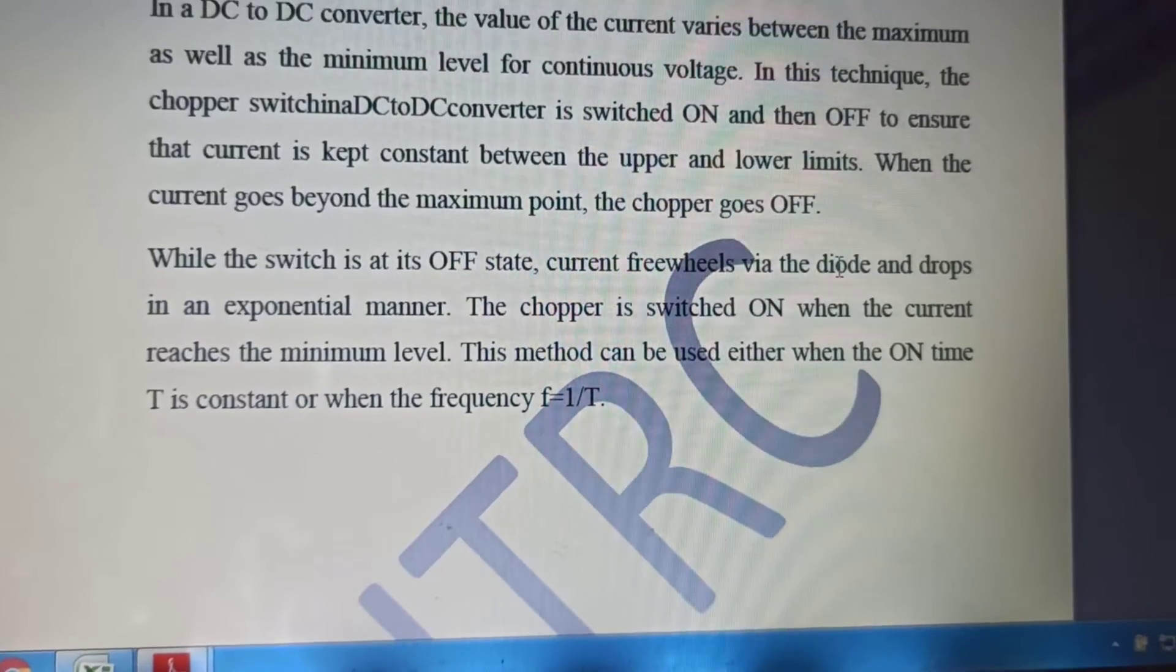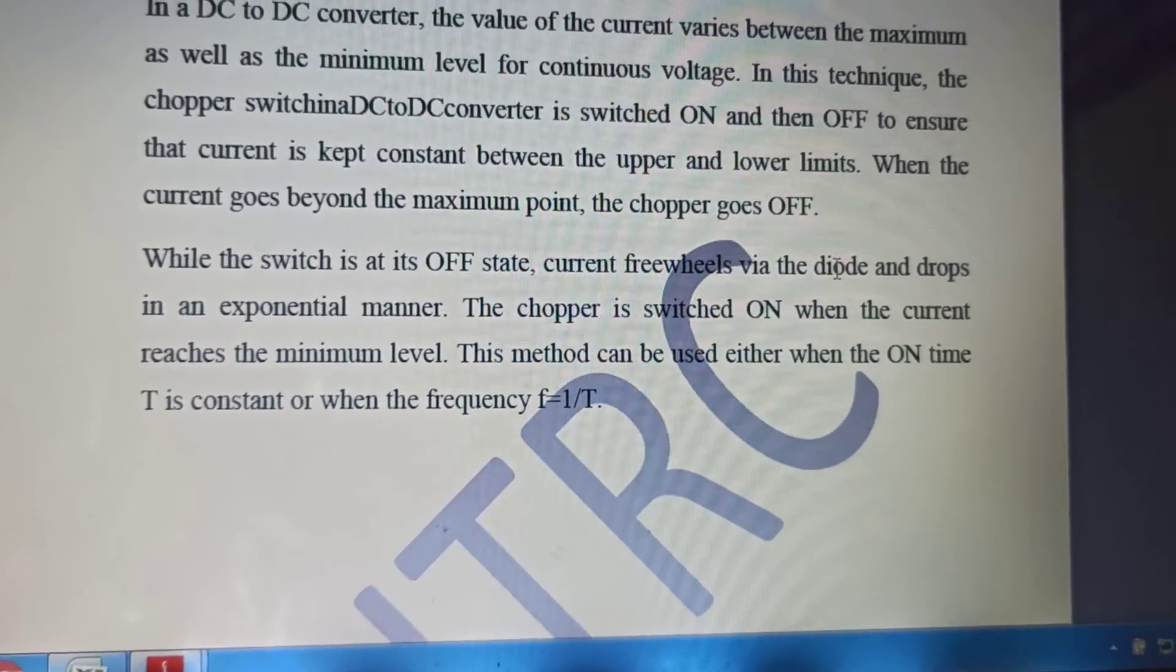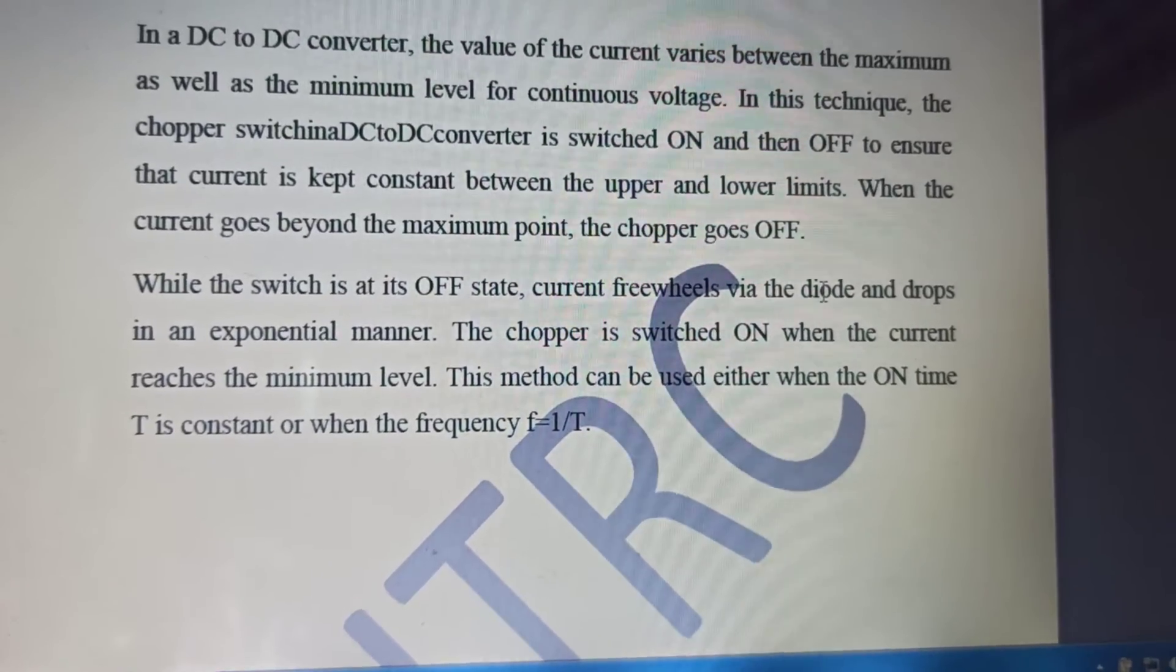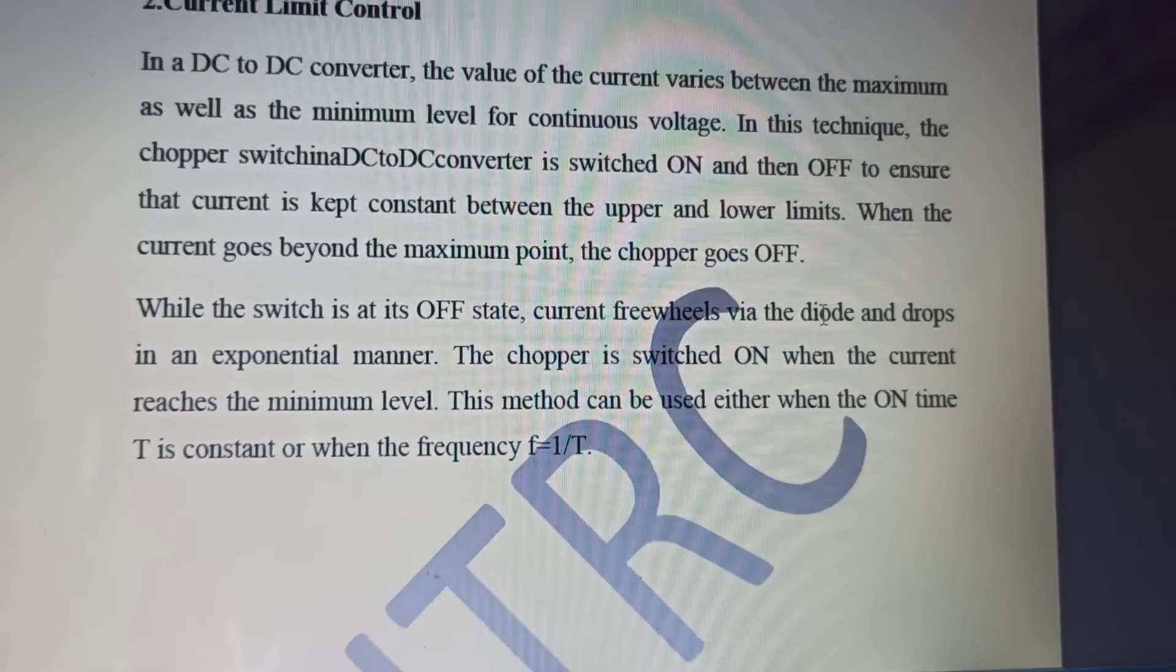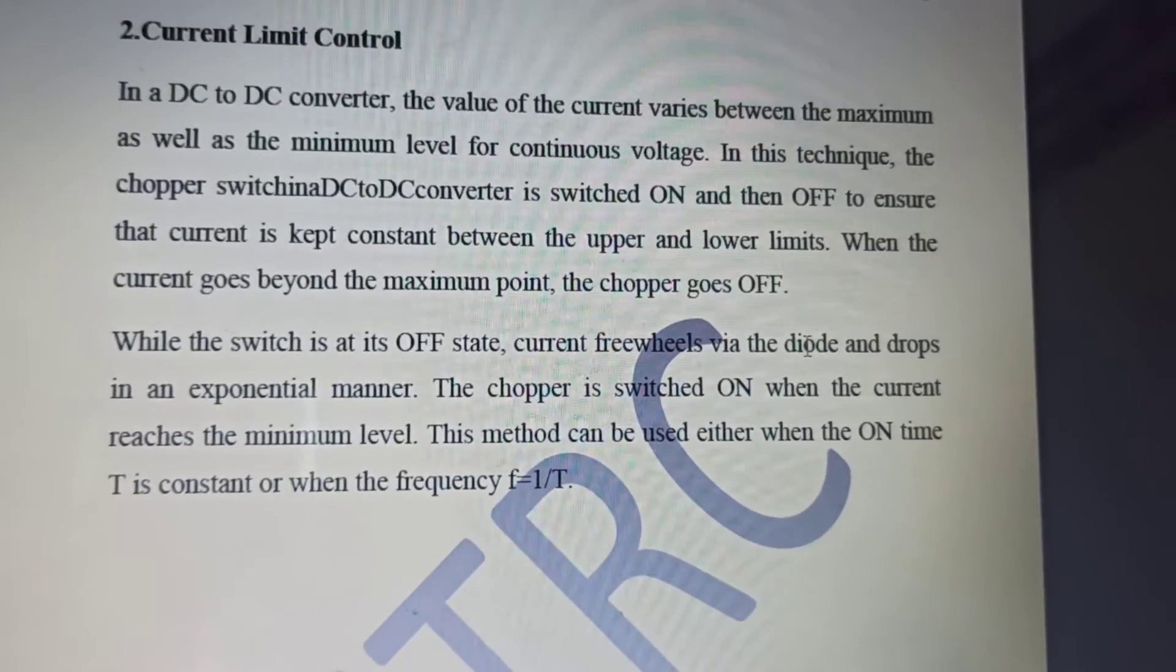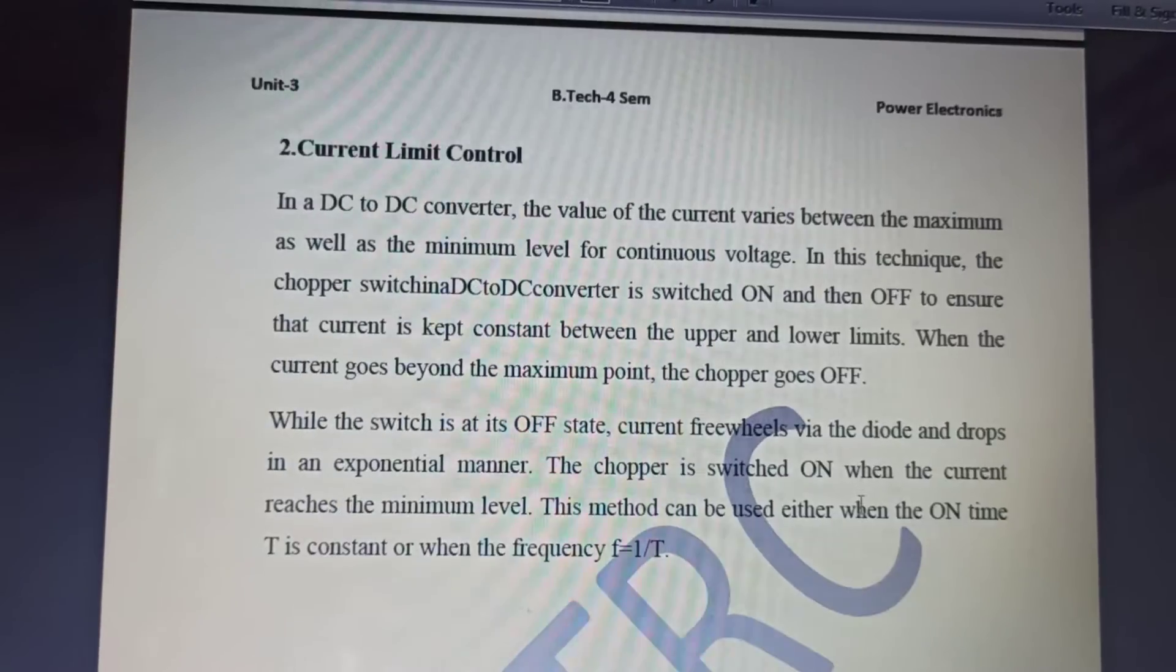After that, when the current reaches the minimum level, the chopper is switched on. So the current has to be maintained between a band and that band should be there. The current will remain intact inside a band. This is what we have discussed in current limit control.